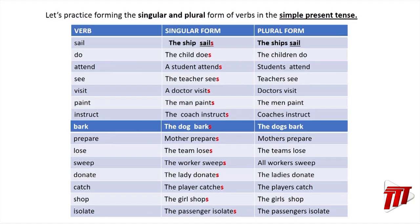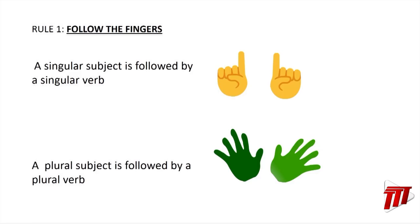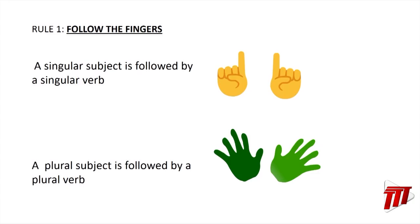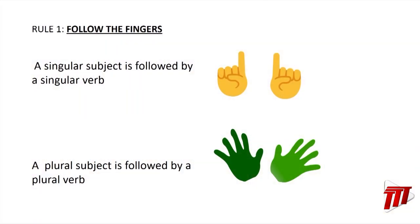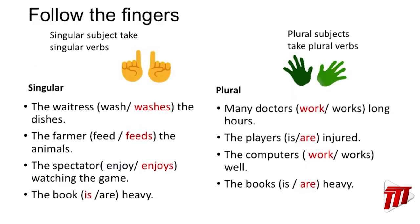Once again, the singular form of the verb has an s, and the plural form of the verb has no s. Our first rule of subject and verb agreement is what we call the 'follow the fingers' rule. We have taken these rules and put them across in a fun and interesting way to make them memorable. The basic rule is: a singular subject is followed by a singular verb, and a plural subject is followed by a plural verb.